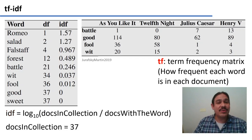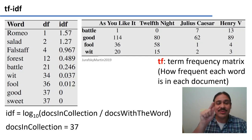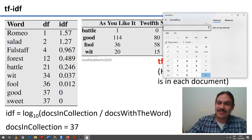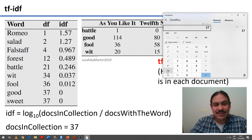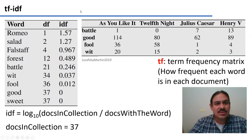We then perform a further calculation: we take the total number of documents in the collection (37) and divide it by the number of documents that contain the word. In the case of 'Romeo,' it will be 37 divided by 1, which equals 37. Then we take the base-10 logarithm of that number. The base-10 logarithm of 37 is 1.57, which is what we see here. So for all these numbers, this is the total documents (37) divided by the number of documents that have the word.